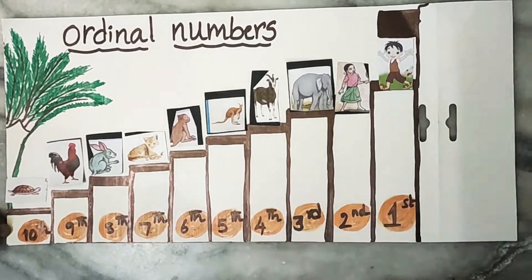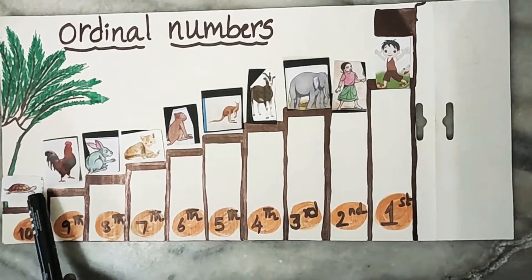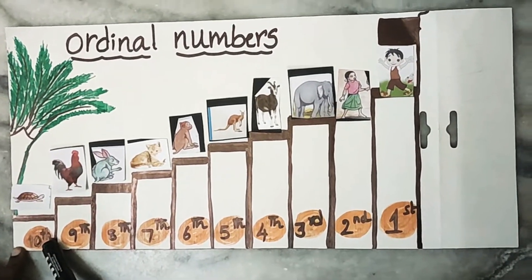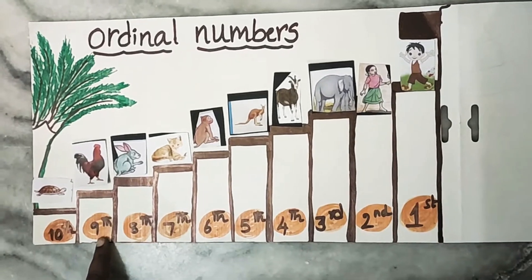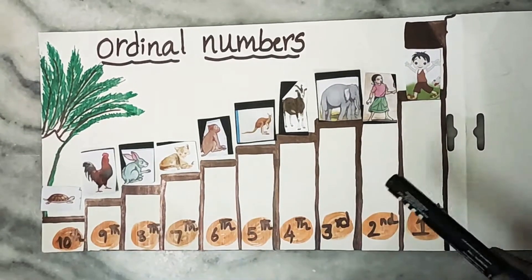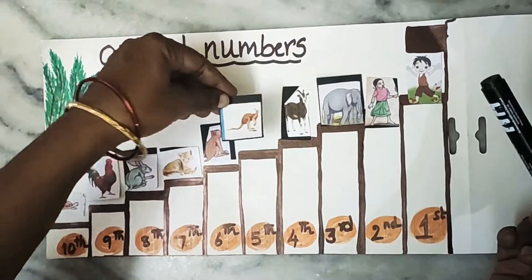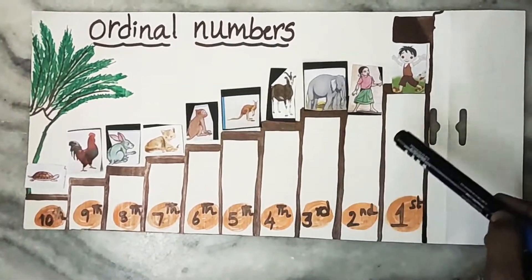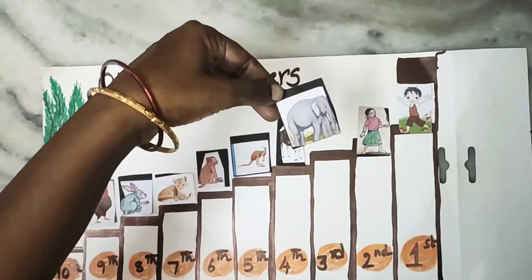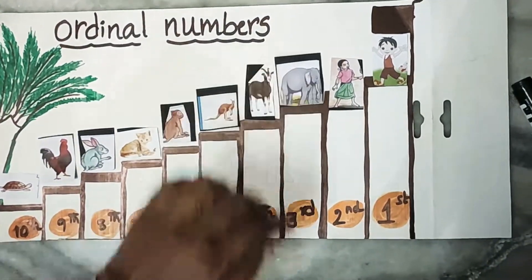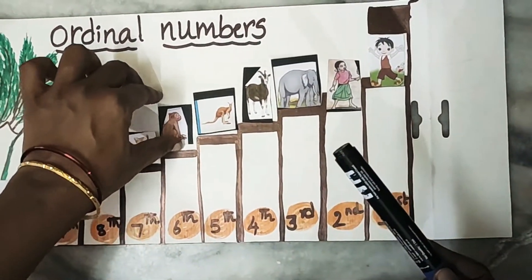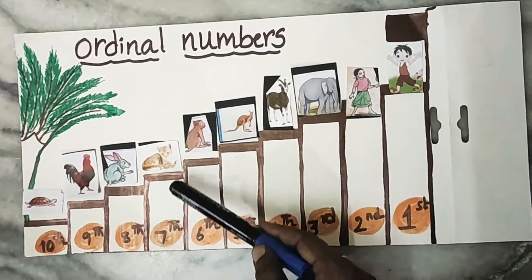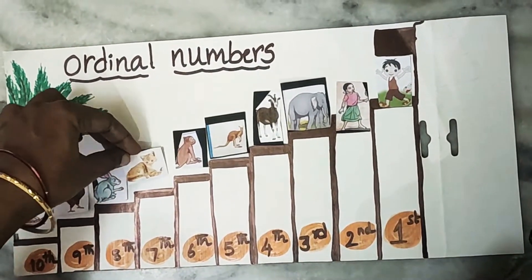Please check the pictures here. Where is the tortoise standing? It is in 10th place. And who is in 9th place? Hen. Who is in 5th place? Kangaroo is in 5th place. And who is in 3rd place? Elephant. Who is in 6th place? Monkey is in 6th place. And who is in 7th place? Cat is in 7th place.